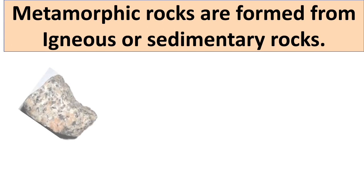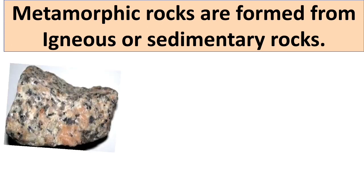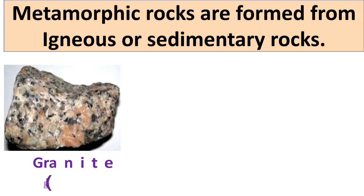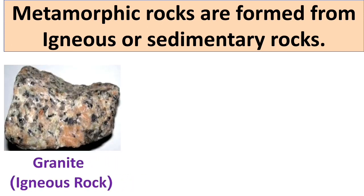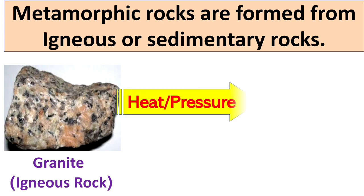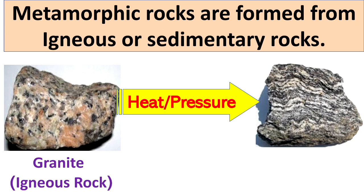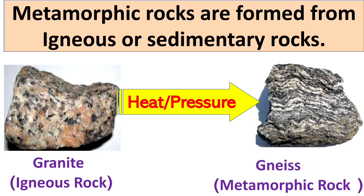For example, this is granite, which is an igneous rock. When it gets tremendous heat and pressure, it changes into gneiss, which is a metamorphic rock.